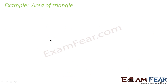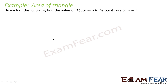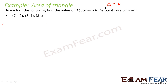Let's take another example. The question says: in each of the following, find the value of k for which the points are collinear. For collinear points, there are two approaches: one is that the area of the triangle is zero, and the second is that if you have three points A, B, C, then AC = AB + BC. Since we are dealing with area of triangle now, we will use the area approach.